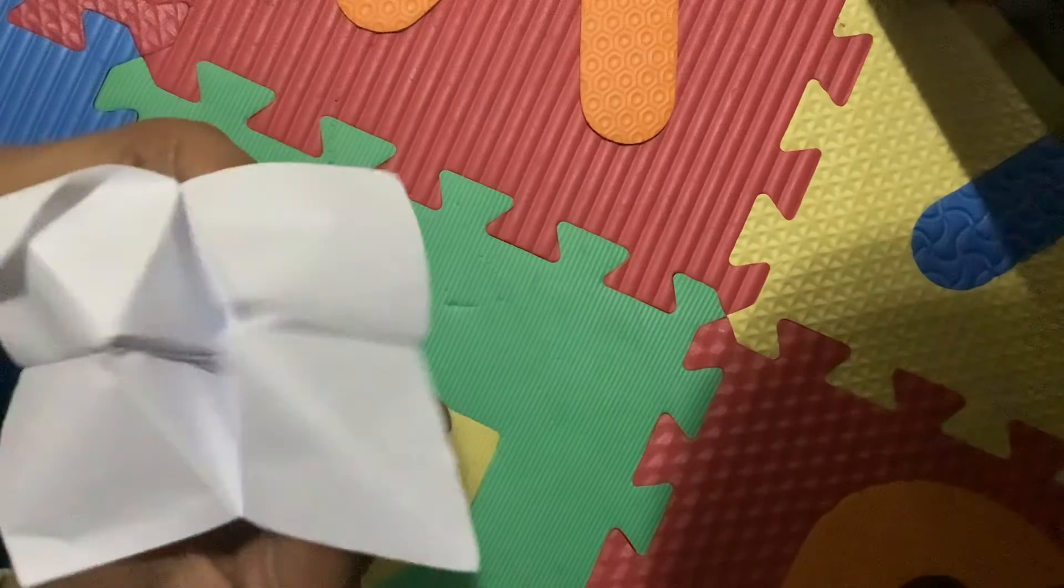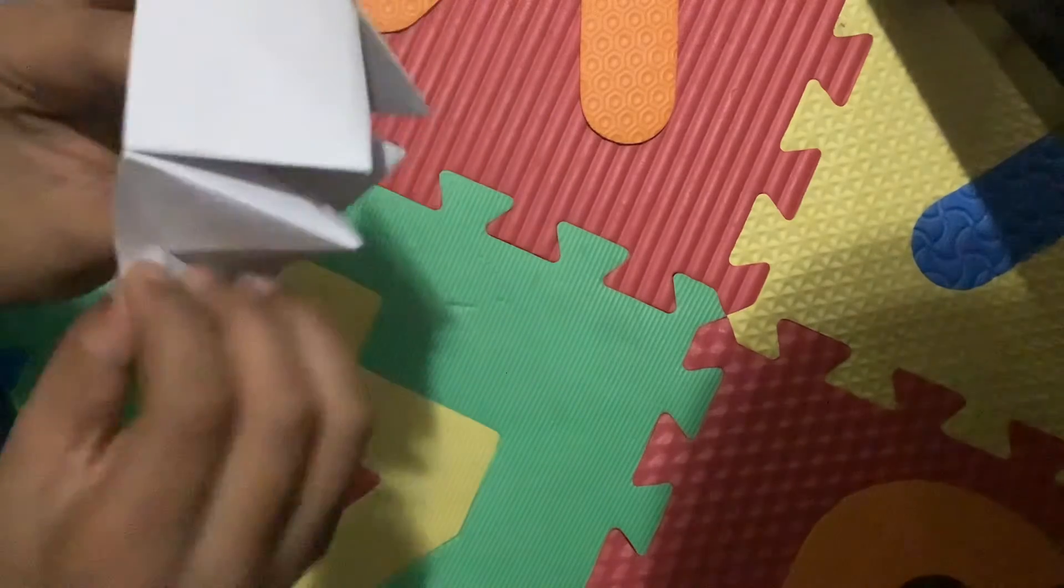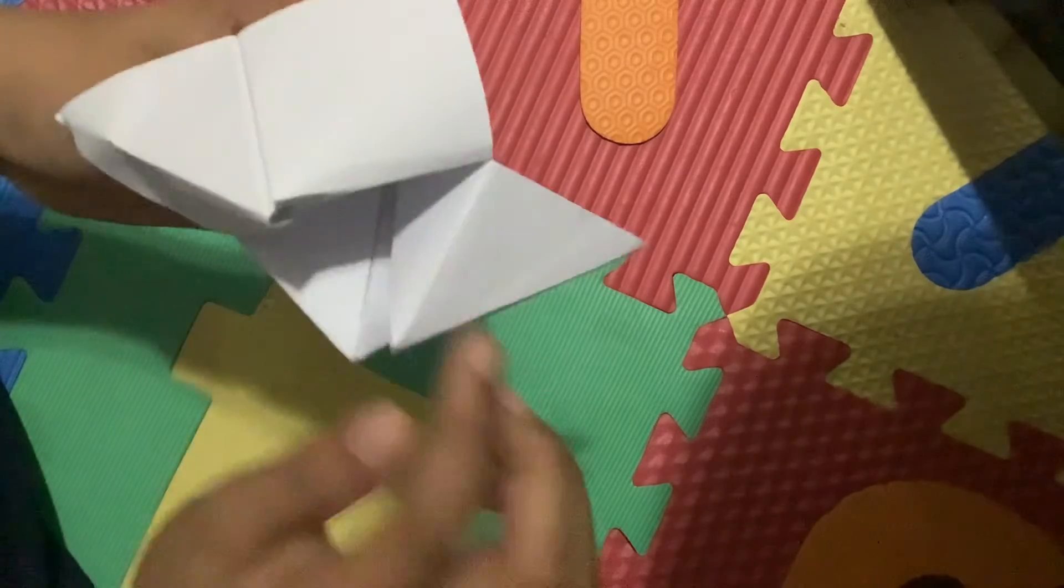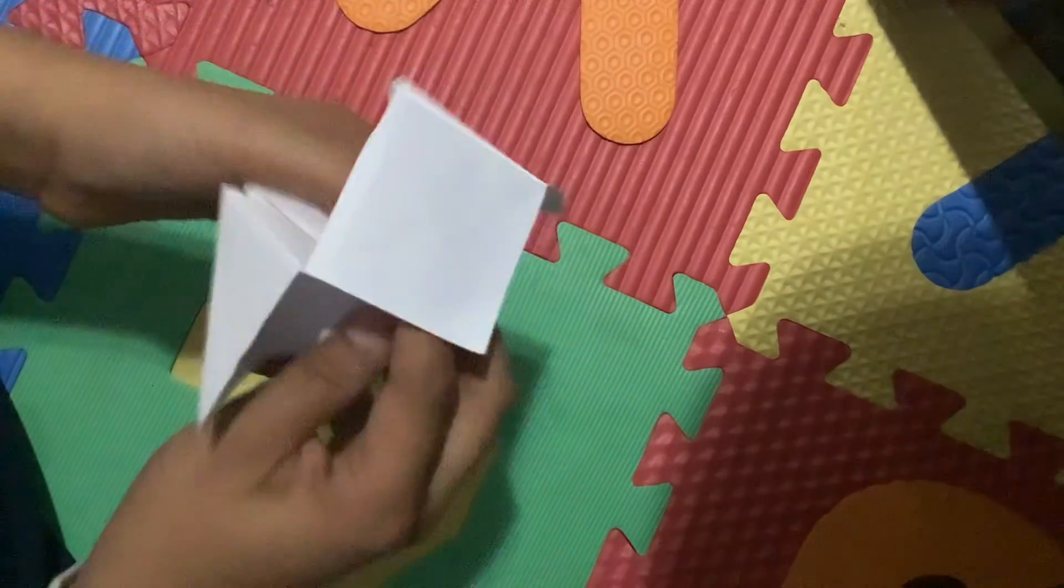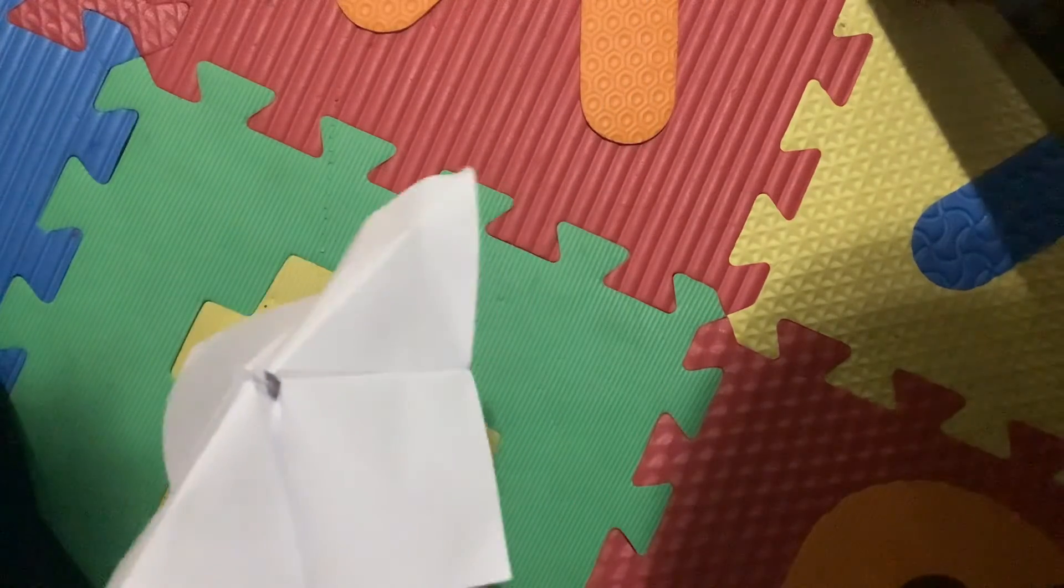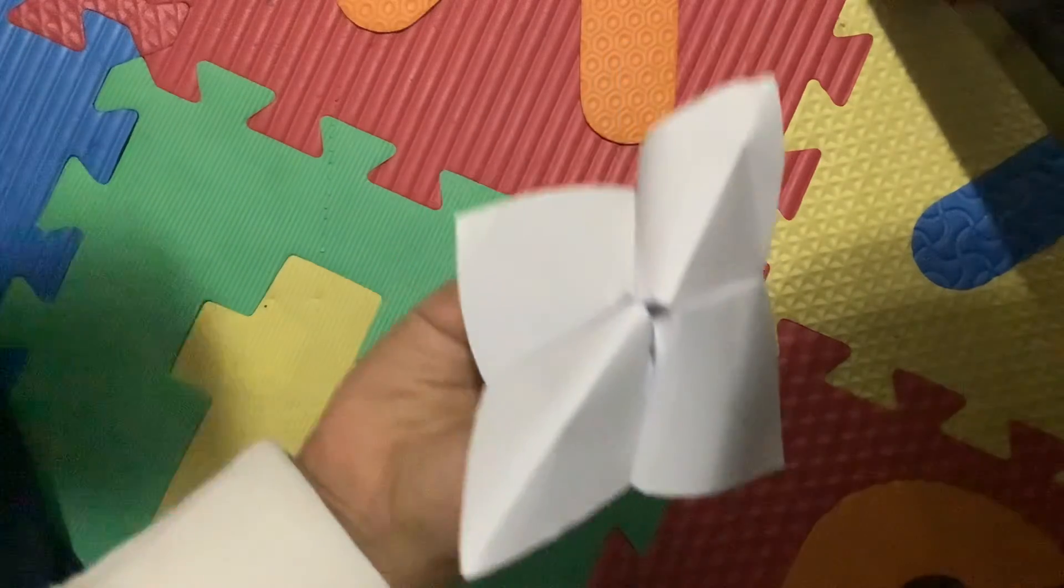And it should work as a cootie catcher. Then you're supposed to draw colors on the outside and write a bunch of fortunes inside, and it will tell you your fortune. Cootie catcher fortune teller. Bye guys!